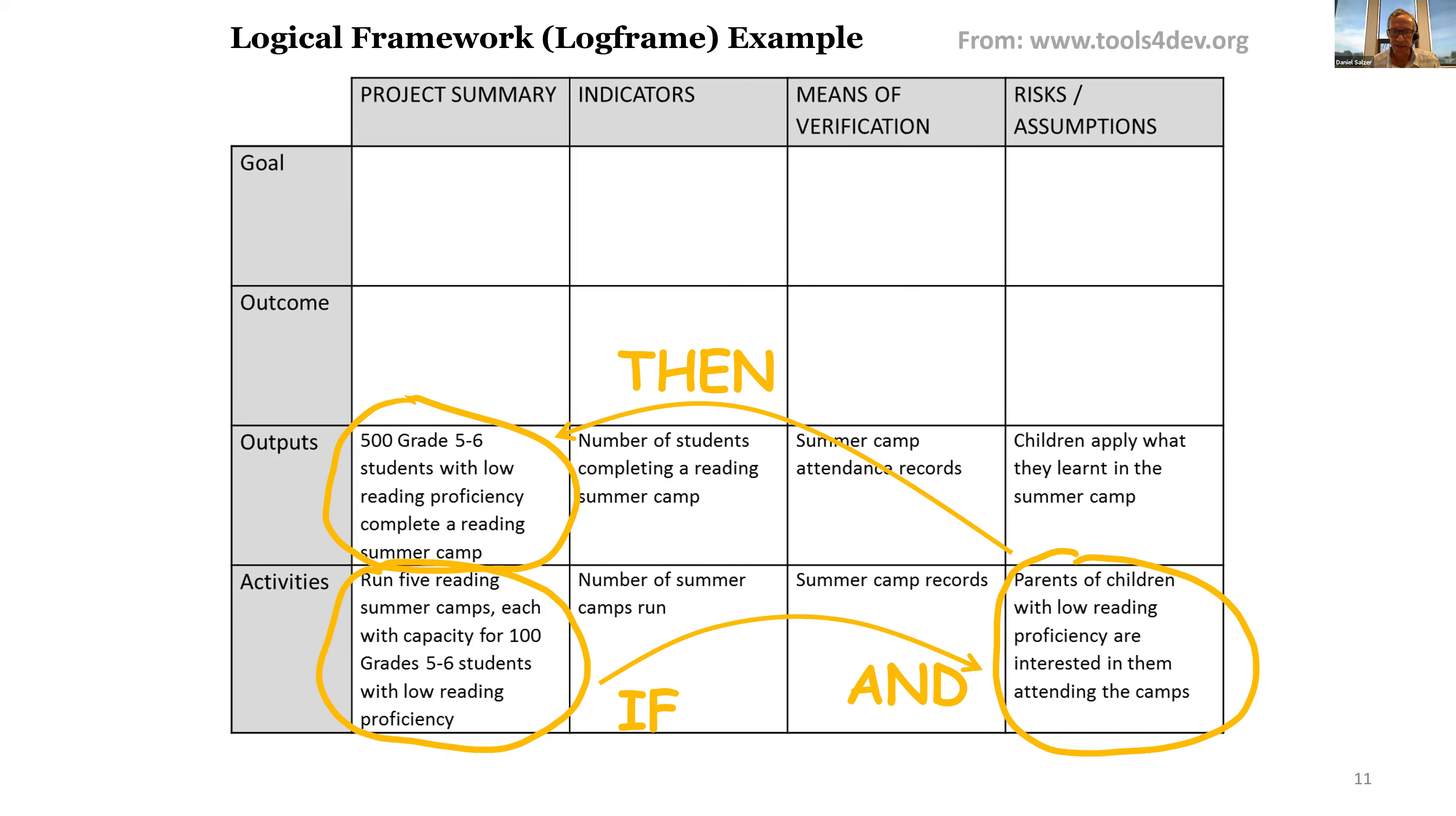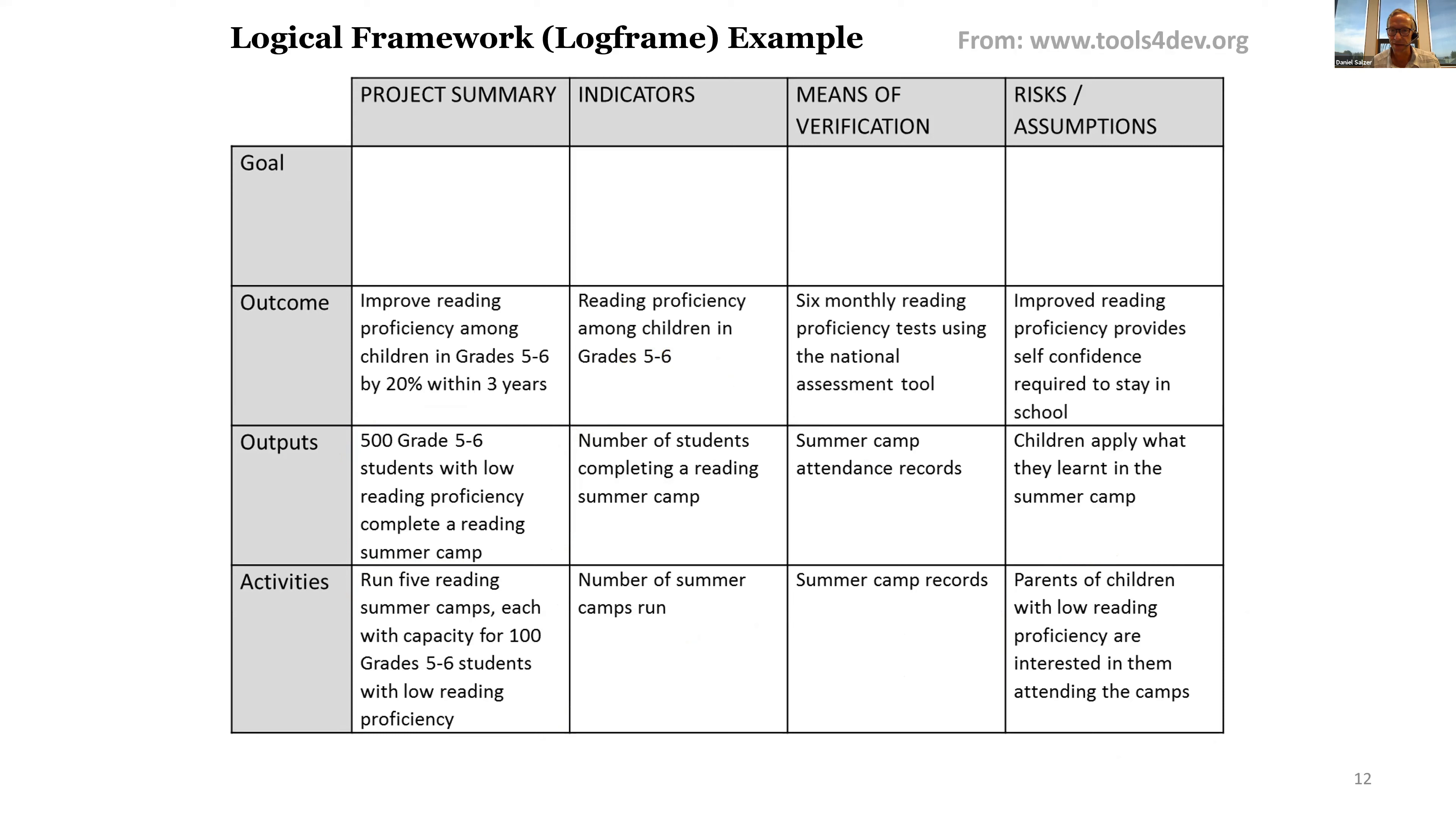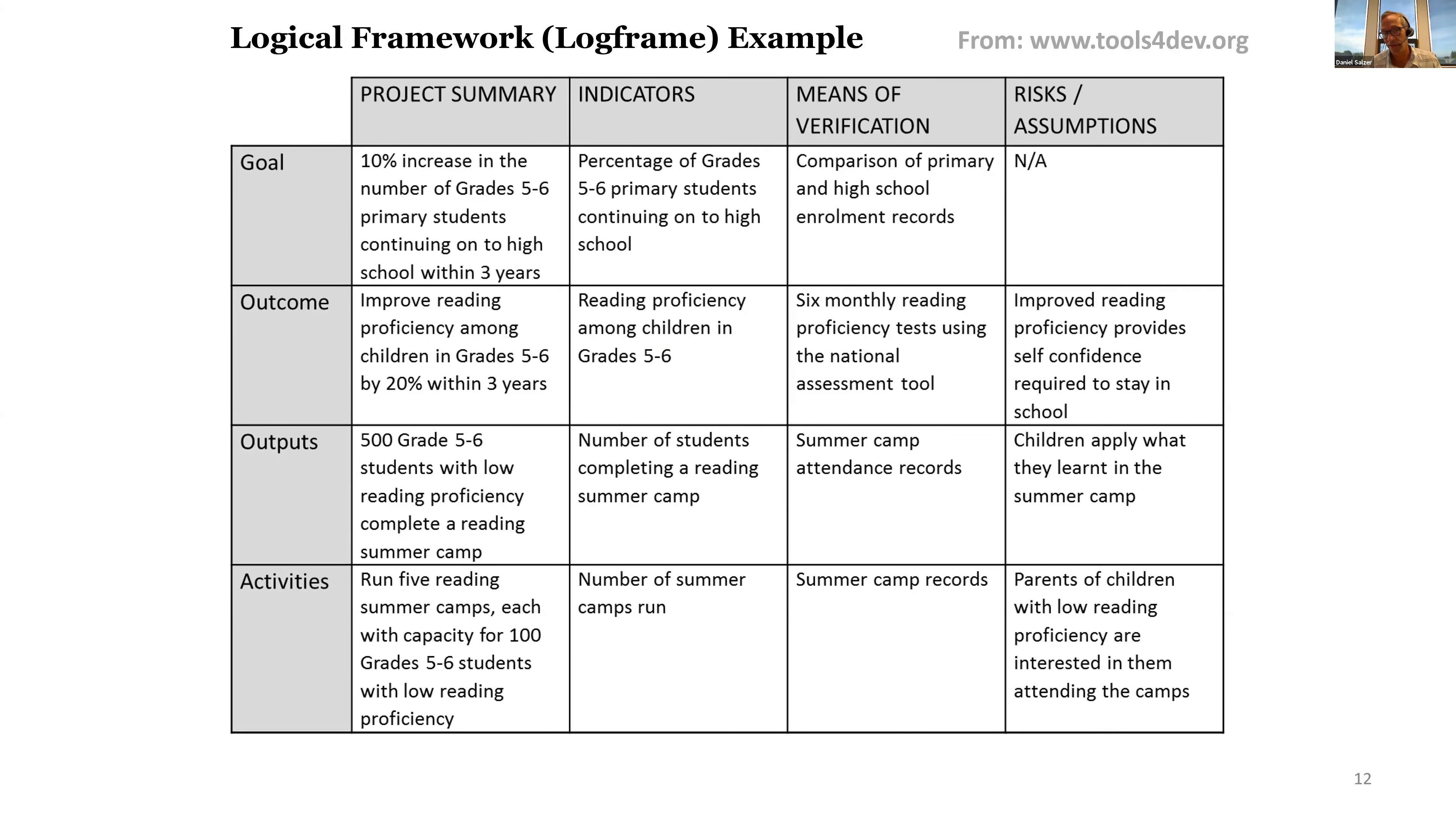You typically look at: if these activities take place and these assumptions listed on the right are met, then you'll get these results. If you continue with that, it will deliver the next results and ultimately get you to the results here. You can see these are written in measurable ways.